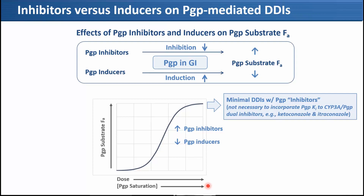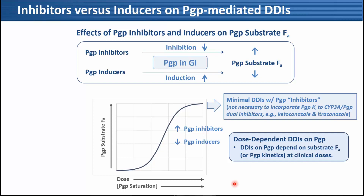We have quite a few clinical DDI datasets showing this scenario where we don't need to incorporate P-gp KI for CYP3A/P-gp dual inhibitors such as ketoconazole and itraconazole. This scenario may also be applicable to P-gp inducers if P-gp is totally saturated. This means DDI on P-gp is dose-dependent because DDI really depends on substrate FEa or P-gp kinetics at clinical doses. We need to focus not only on the P-gp perpetrator but also on the P-gp substrate to understand P-gp-mediated DDI.